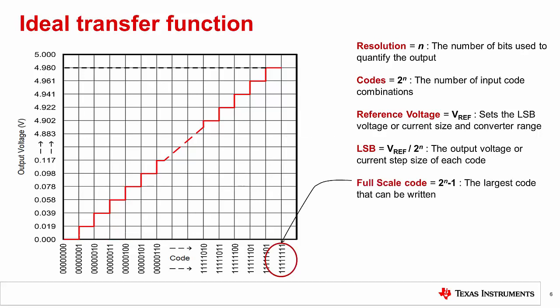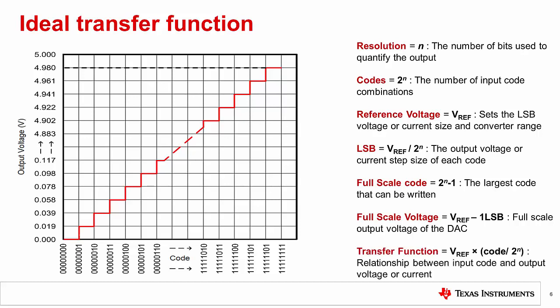The full-scale code is the largest code that can be written. This is limited by the resolution of the device. The full-scale code here is 255. The full-scale voltage is the voltage output of the DAC at the highest possible code. The transfer function is a convenient way to describe the relationship between the input code and the output. With it, you can determine the output voltage for any code.